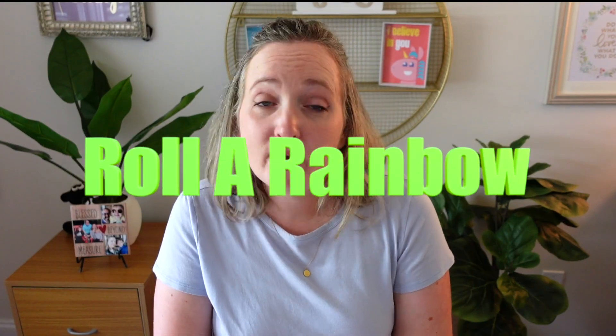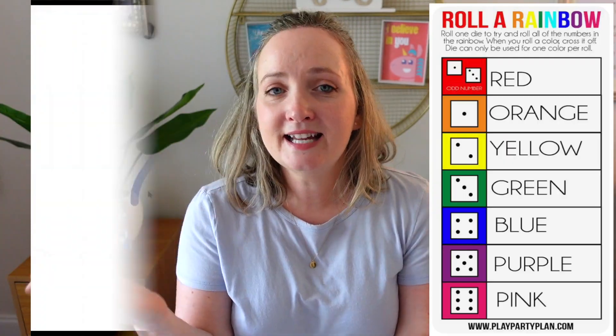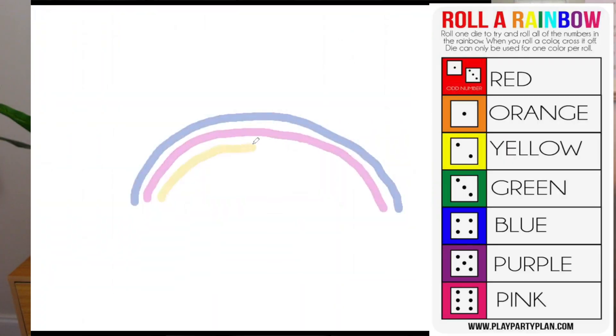The next game is called Roll a Rainbow. To play, every player is going to need one die, a piece of paper, and some colored pencils, crayons, or markers in colorful rainbow colors. Set a timer for one minute and see who can build their rainbow first. Give me a little rainbow emoji down in the comment section if you also love rainbows.